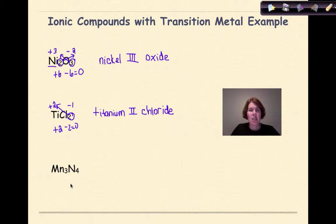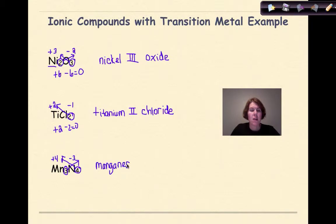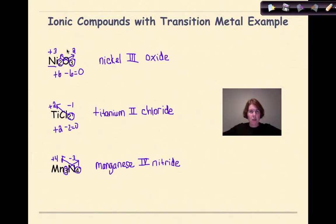Our last transition metal example: Mn₃N₄. The subscript 3 goes back to nitrogen — nitrogen is commonly −3. The subscript 4 goes back to manganese — manganese is the metal and a transition metal — giving it a charge of +4. So this is manganese(IV) nitride. For all of these examples, pay close attention to the subscripts, reverse crisscross them, assign your charges, and check your reference table to make sure the assigned charge makes sense. Always use a Roman numeral for transition metals.